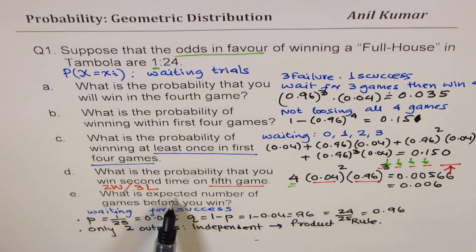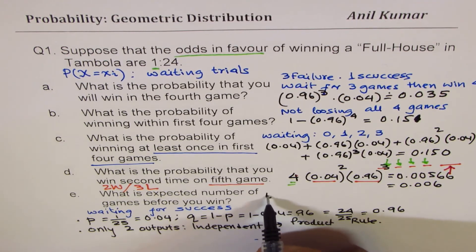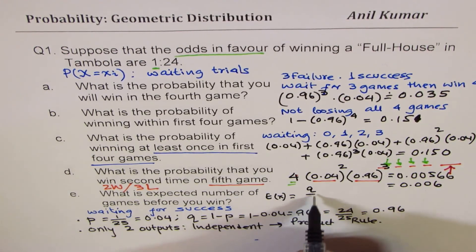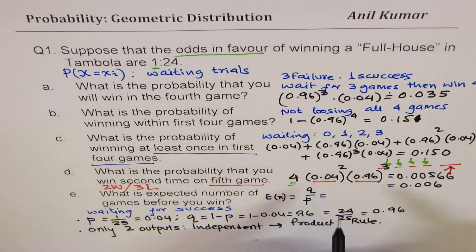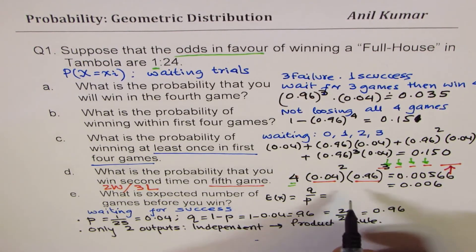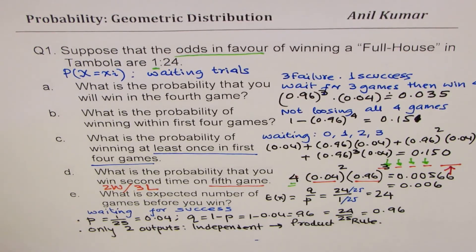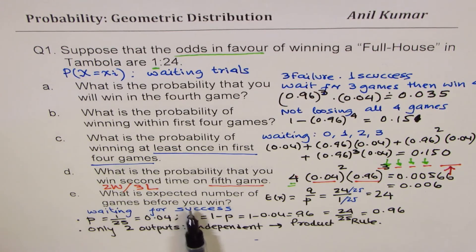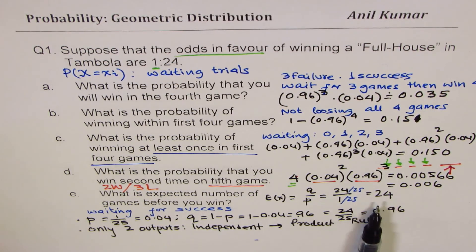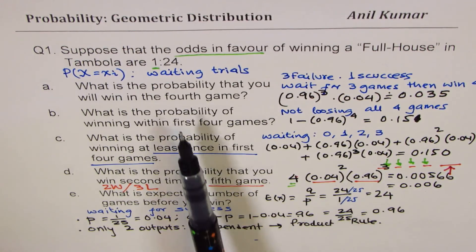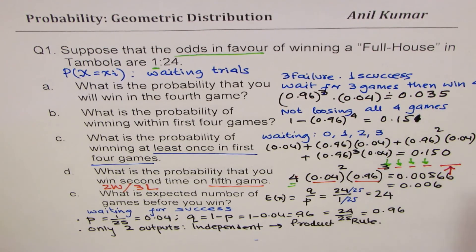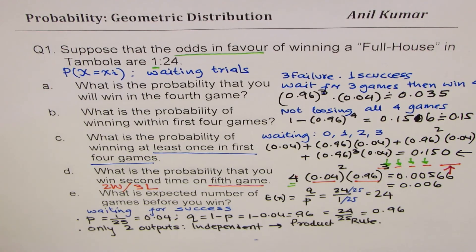Question E: what is the expected number of games before you win? In geometric distribution, this expected value is Q over P, which is 24 over 1 = 24. So in this game you have to wait for 24 games to win, which is why the probabilities for winning in the fourth game and similar questions are very low.